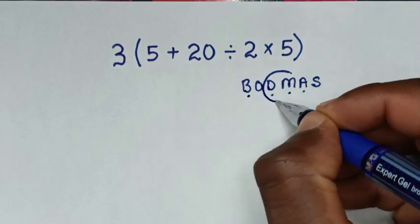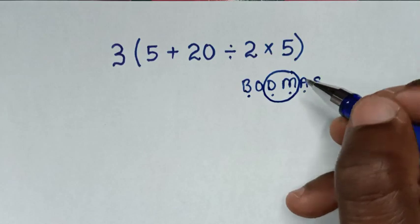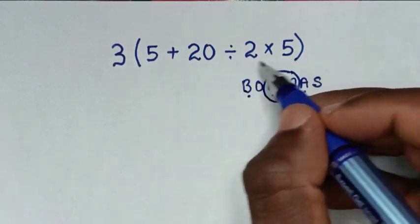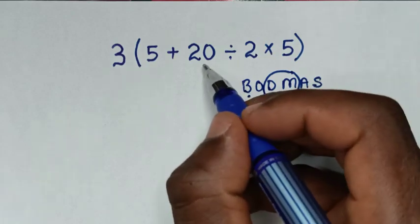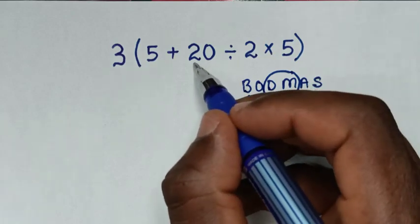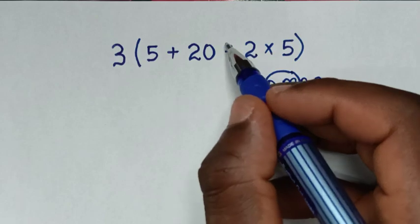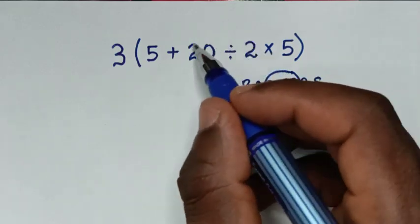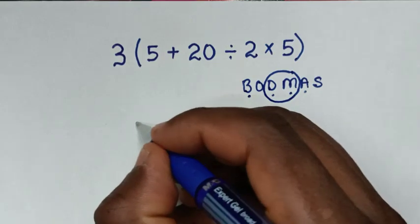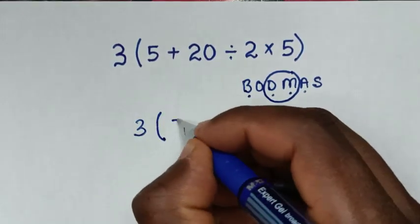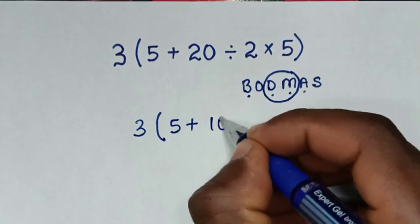Between division and multiplication inside the bracket, division comes first. So we start with 20 divided by 2, which equals 10. The expression becomes: 3 bracket 5 plus 10 times 5 bracket.